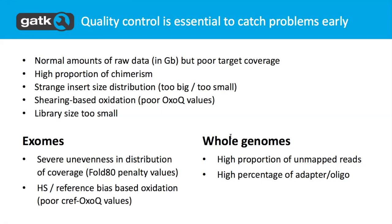We need to collect metrics that help us quantify the oxidation issue. The last problem is that the library size is too small, meaning we don't have a good representation of our sample. So those are the general DNA sequencing issues, but for different data types we can also have different problems that are specific to those types. For example, in exome sequencing, the coverage can be really uneven.